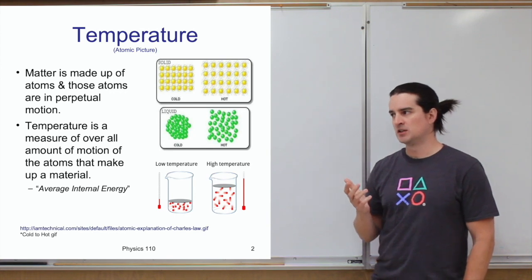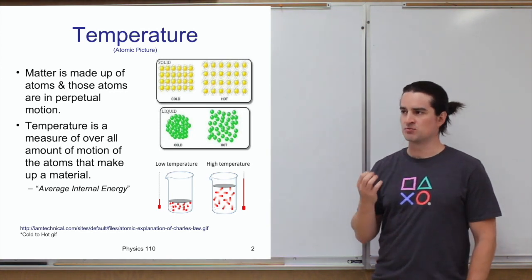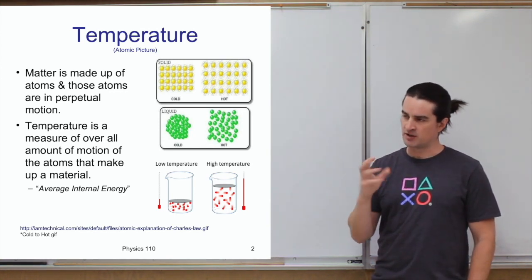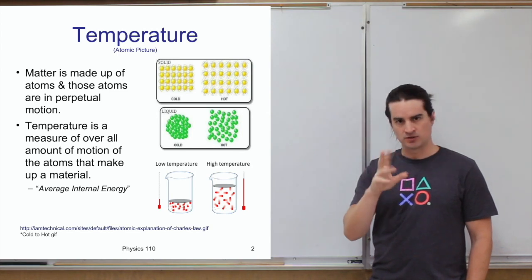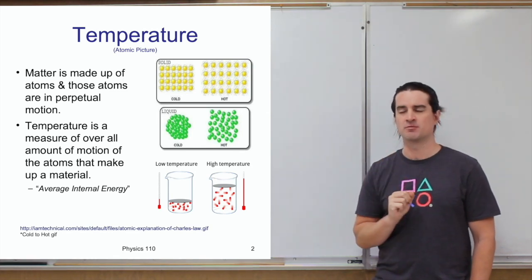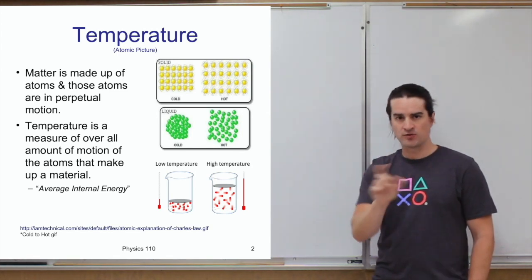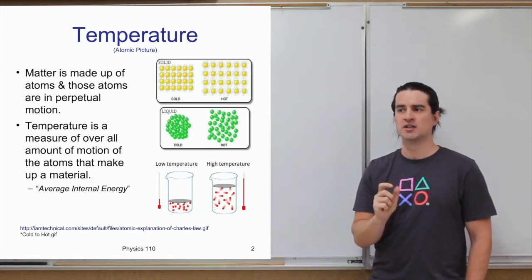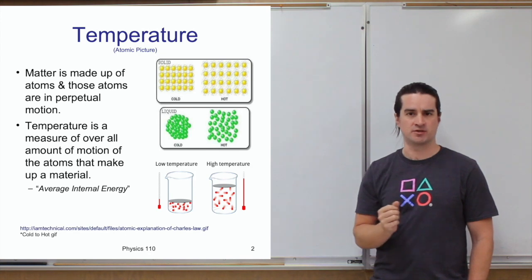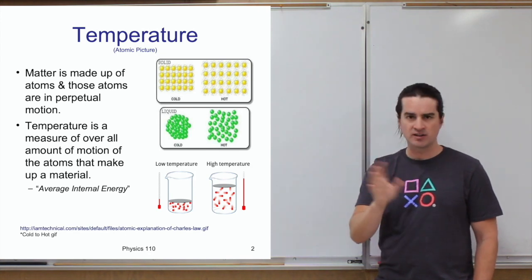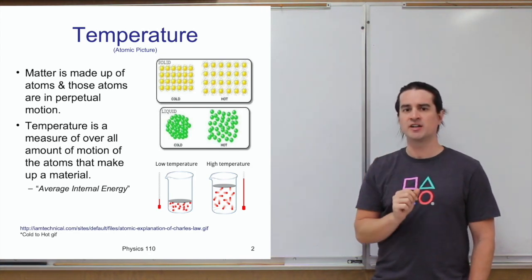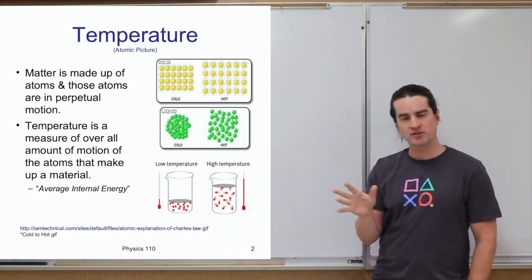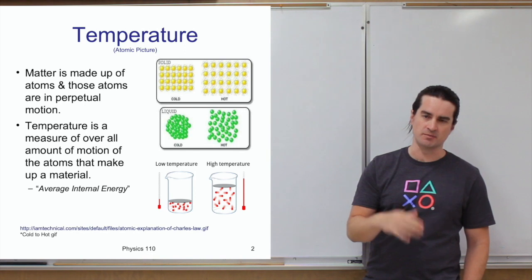You can think about it as: if on average the molecules or atoms making up the material are moving more, jiggling about more, moving around faster, that's a higher temperature. If they're moving around less, jiggling a little bit less — on average — it's a lower temperature.